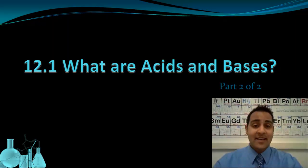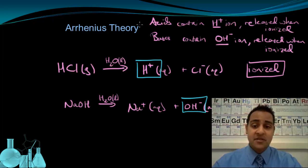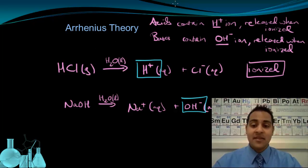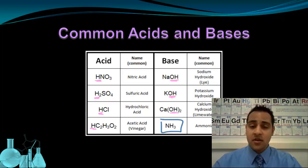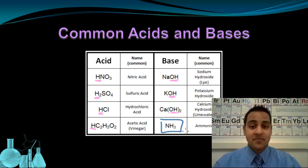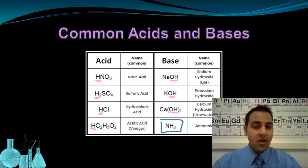Welcome to the second part of our introduction to acids and bases. In the last part, we looked at the Arrhenius theory for explaining what an acid is and what a base is. The Arrhenius definitions basically meant that acids contain the H+ ion and bases contain the hydroxide, the OH- ion. But we also saw how the Arrhenius definitions can't explain the case of ammonia, because ammonia doesn't contain OH-. So in this lesson, we're going to look at two further explanations of acids and bases that are going to give us a more complete picture of what they are.